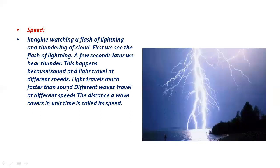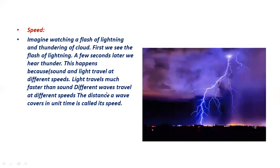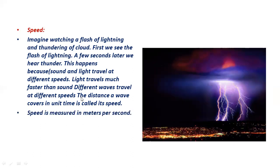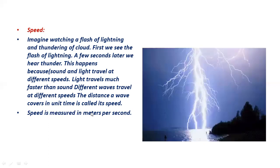Different waves travel at different speeds. The distance a wave covers in unit time is called its speed. Speed is measured as distance per time — meters per second (m/s). So if you know the distance covered and the time taken, you can calculate the speed of a wave.